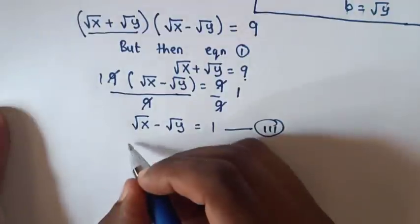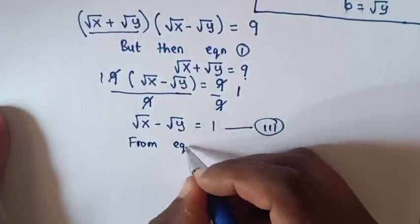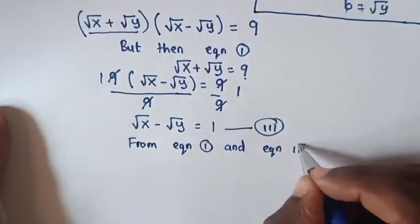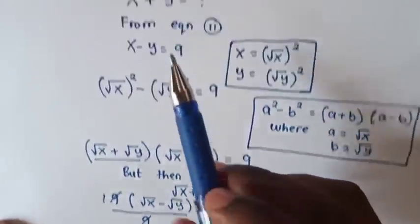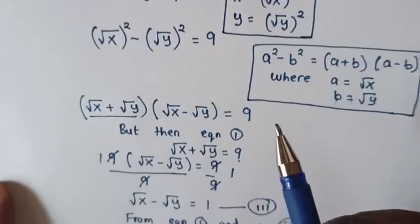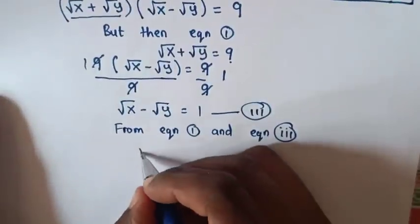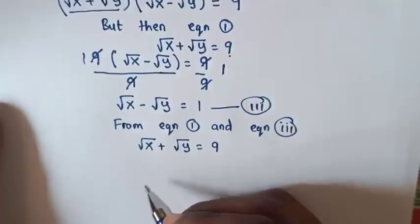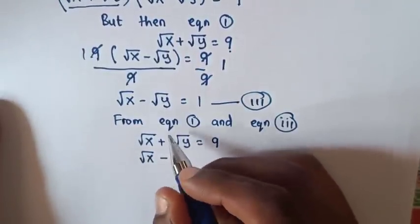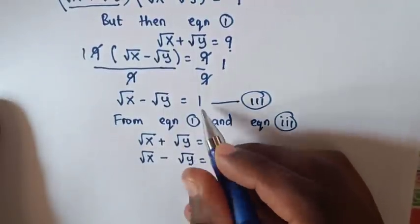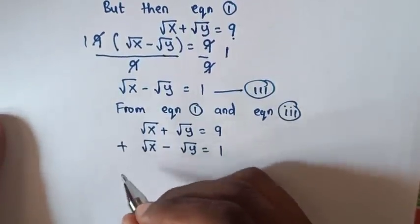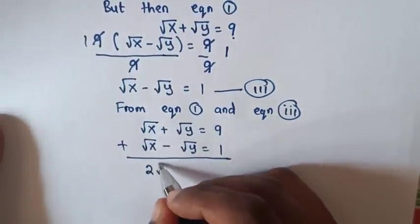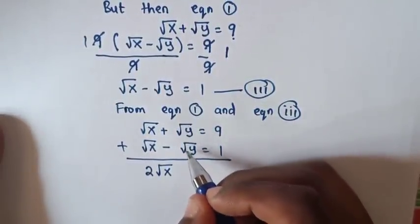Now, using equation 1 and equation 3 together — equation 1 is square root of x plus square root of y equals 9, and equation 3 is square root of x minus square root of y equals 1. Adding equations 1 and 3, the square root of y terms cancel and we get 2 times square root of x equals 10.